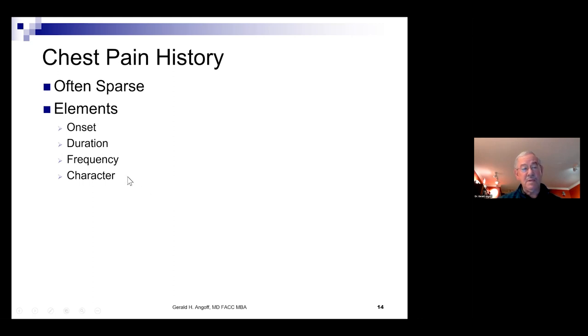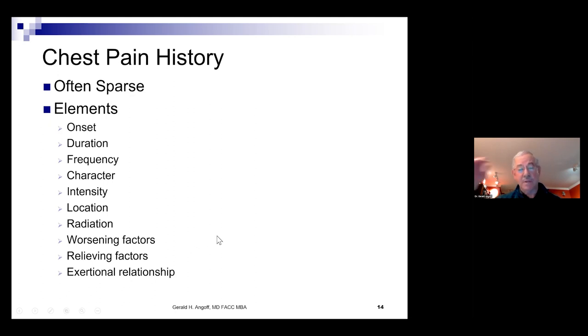What are the elements of a good chest discomfort history? Well, certainly onset, duration, frequency, character. Character is a critical factor. What really is the description of what's being sensed? Is it an ache, heaviness, sharp stabbing pain? It really helps us quite a bit. Intensity, location, radiation. Where else is it going? What makes it worse? What makes it better? Is there a relationship to exertion?